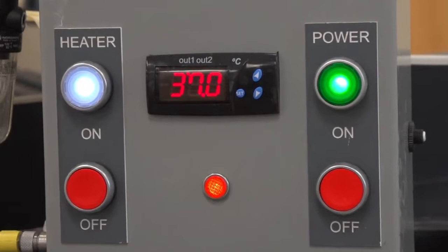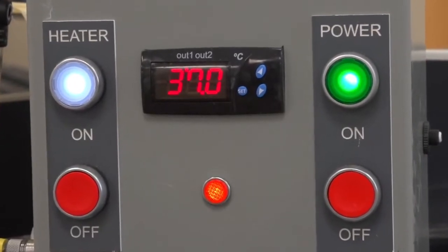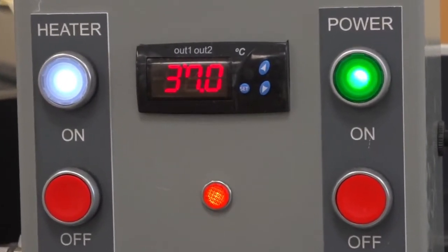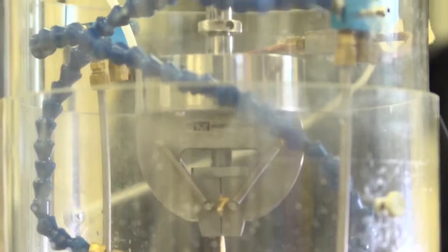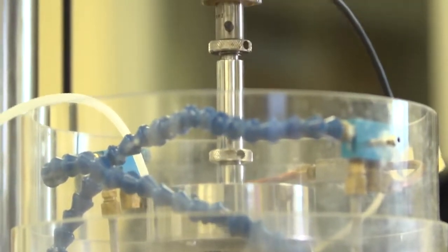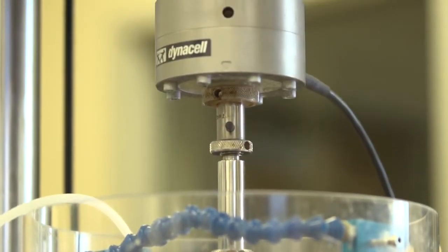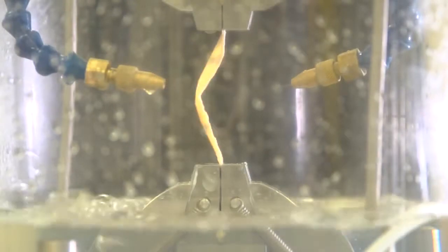We test at a physiologic temperature to create an environment at 37 degrees C, which is body temp. In doing that, you closely approximate how these allografts would function inside the body versus at room temp because collagen does behave differently at 25 degrees C versus 37 degrees C.